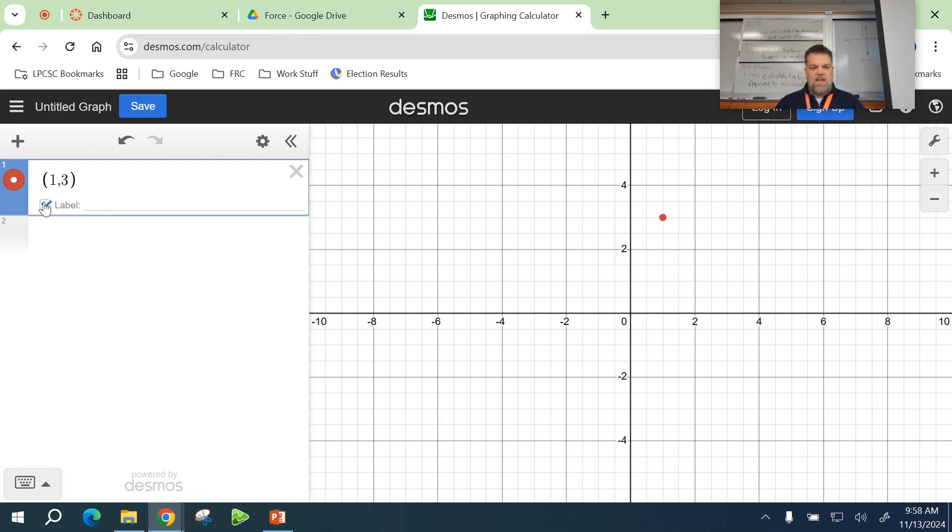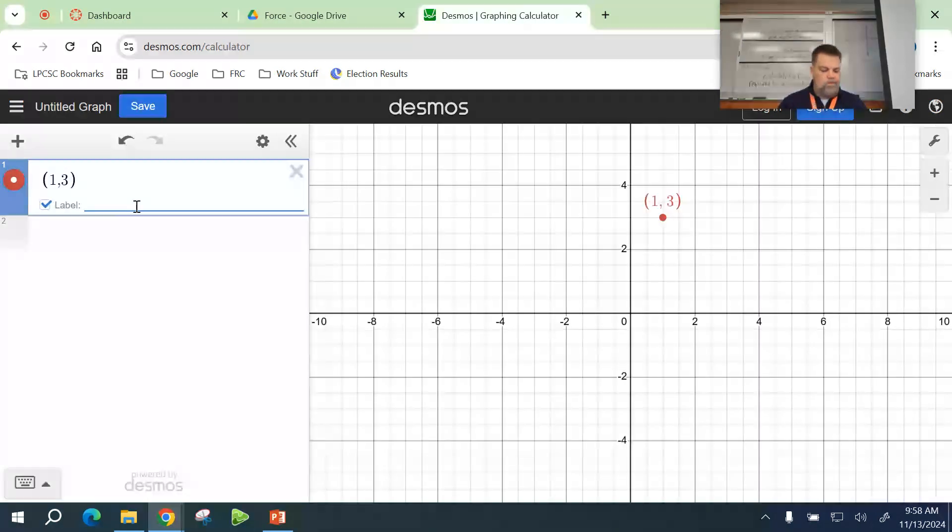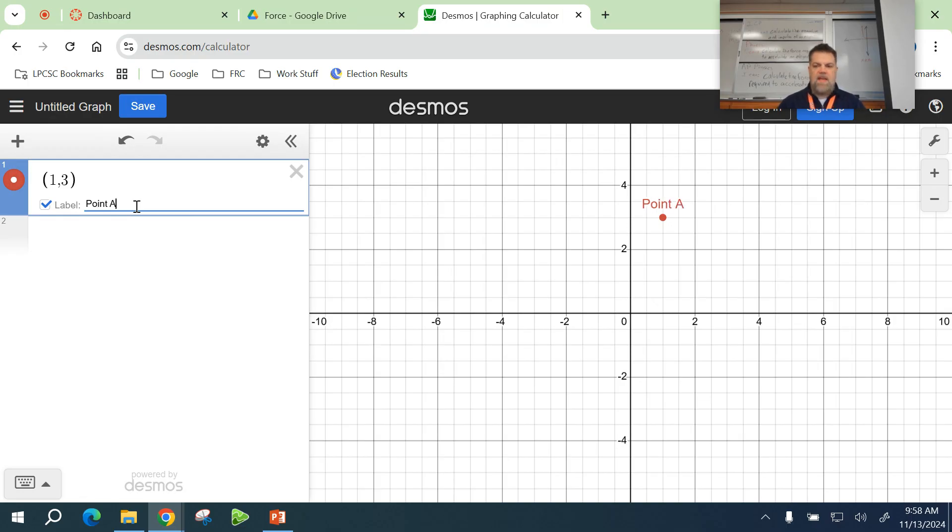You can add a label to that if you want to. Point A, which is kind of a neat feature. Another way that you can plot points, if you have multiple points, you can just do a table.